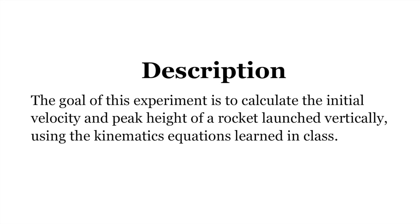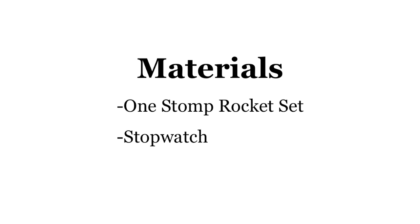The goal of this experiment is to calculate the initial velocity and peak height of the rocket launched vertically using the kinematics equations learned in class. The materials needed for this lab are one stomp rocket set and one stopwatch.